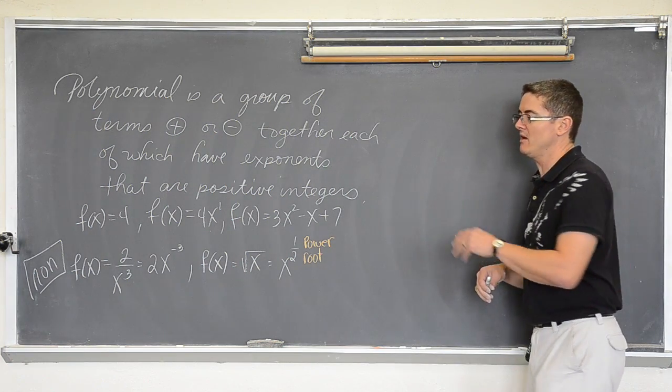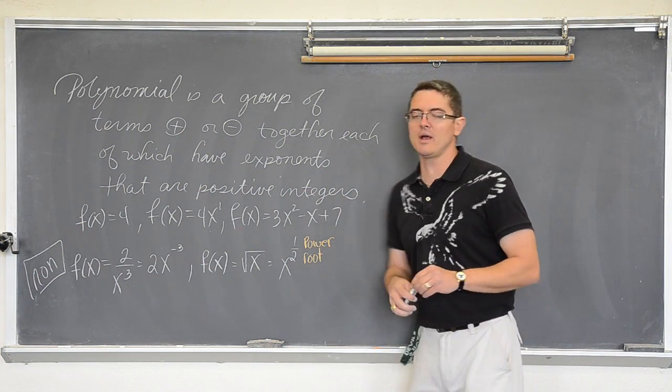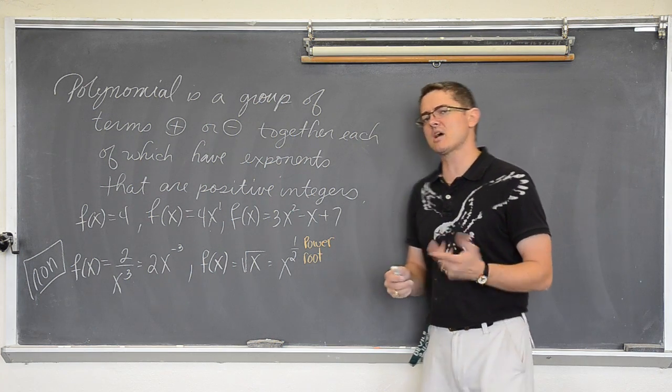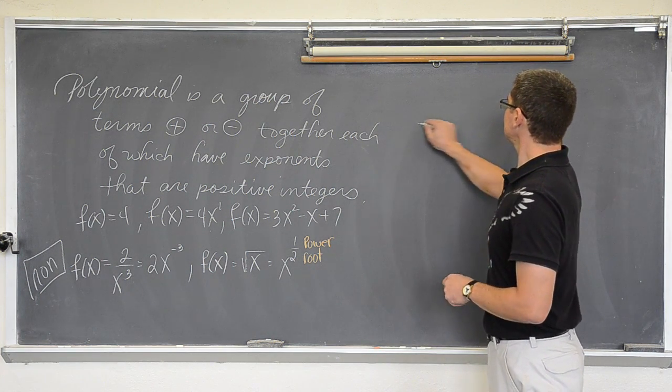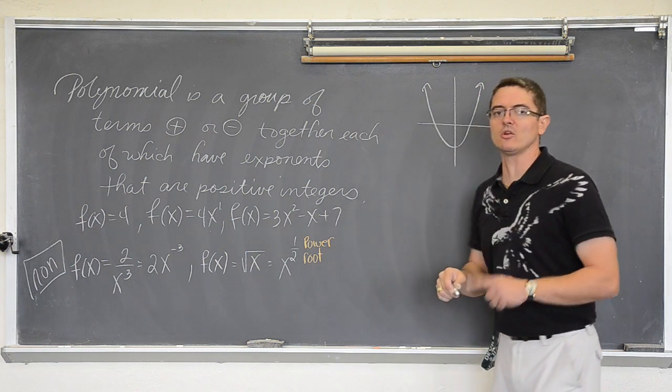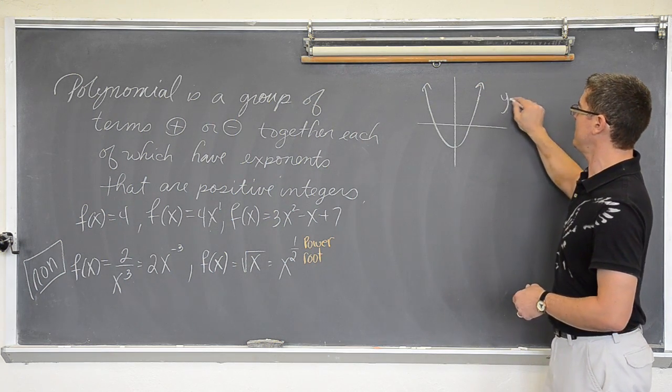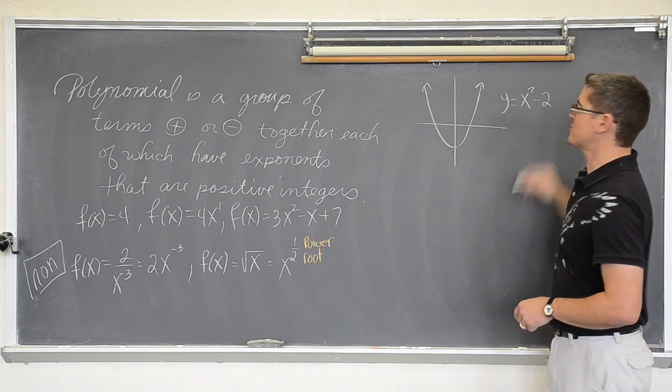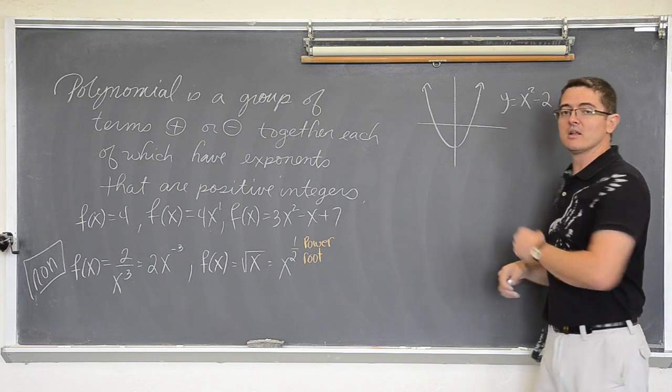So don't be fooled by seeing that x to the positive three in the bottom of a fraction. That is not a polynomial. Polynomials can also not have fractional exponents. Just a few examples of a visual check of the equation to see if it is a polynomial. Let's talk about some graphs.